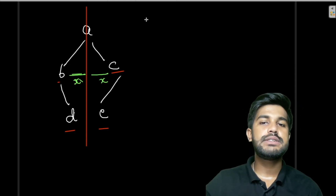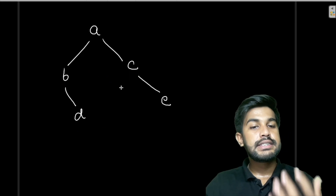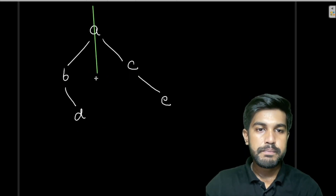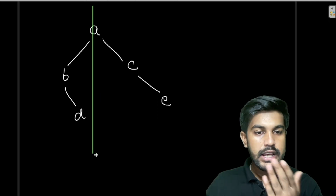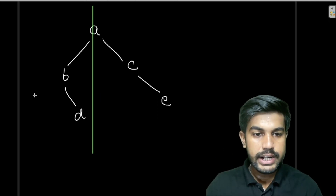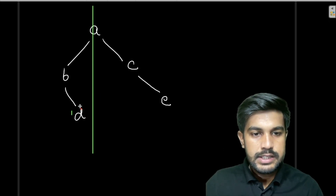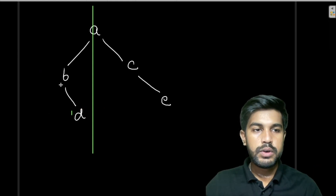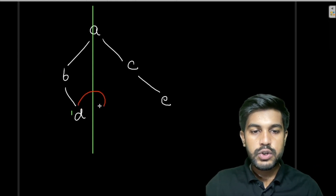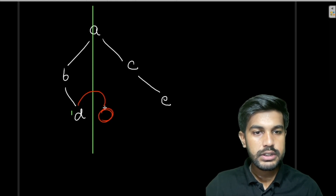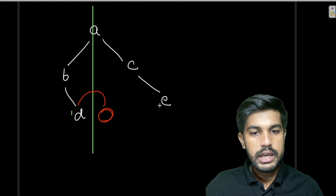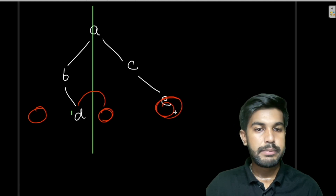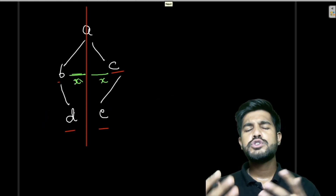Now let us see an example which is not a foldable binary tree. Again, we bisect it from the middle. If you just fold it, you would see that there is no element at a certain position on one side, but there is an element at that position on the other side — making it non-foldable.